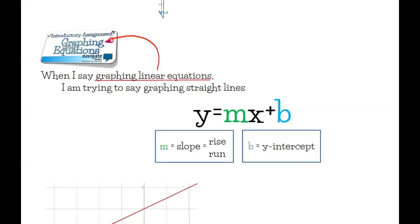When I say graphing linear equations, what I mean is we're going to be graphing straight lines. There are a number of different formats to graph lines, but probably the easiest is this format — it is called y equals mx plus b, or the slope-intercept form. It's called slope-intercept form because m stands for slope, which is rise over run, and b is our y-intercept.